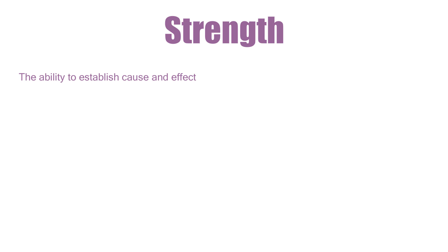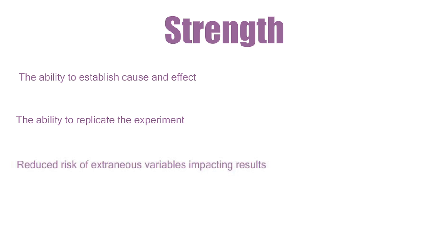So what are the strengths of the lab experiment? There are three key areas: first, the ability to identify a causal relationship between variables, establishing if one actually causes a change in the other; second, the ability to replicate the experiment, which is ideal for retesting the hypothesis by other researchers; and third, by controlling variables, the effects of confounding variables — those are external variables which may affect results — are minimized.